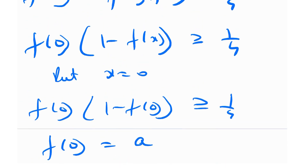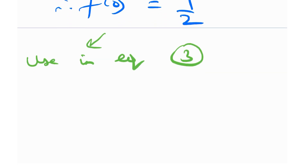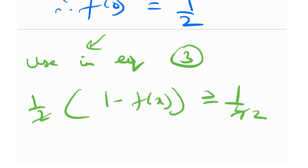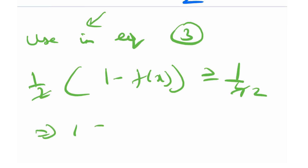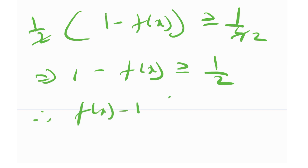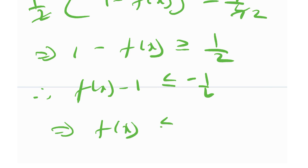I'll label f(0)·(1 − f(x)) ≥ 1/4 as Equation 3. Using f(0) = 1/2 in Equation 3, I get (1/2)·(1 − f(x)) ≥ 1/4, which implies 1 − f(x) ≥ 1/2, and therefore f(x) ≤ 1/2 for all x in the real numbers. I'll label this as Equation 4.